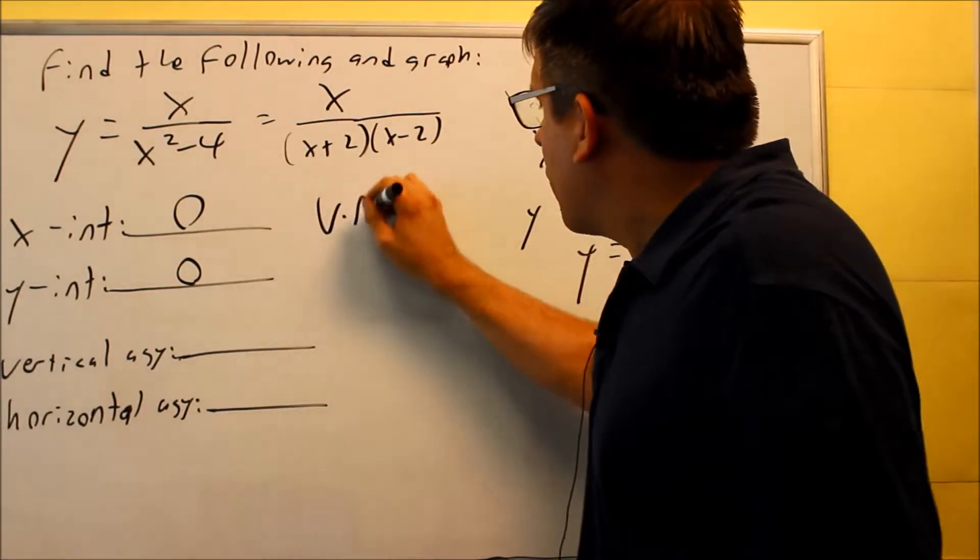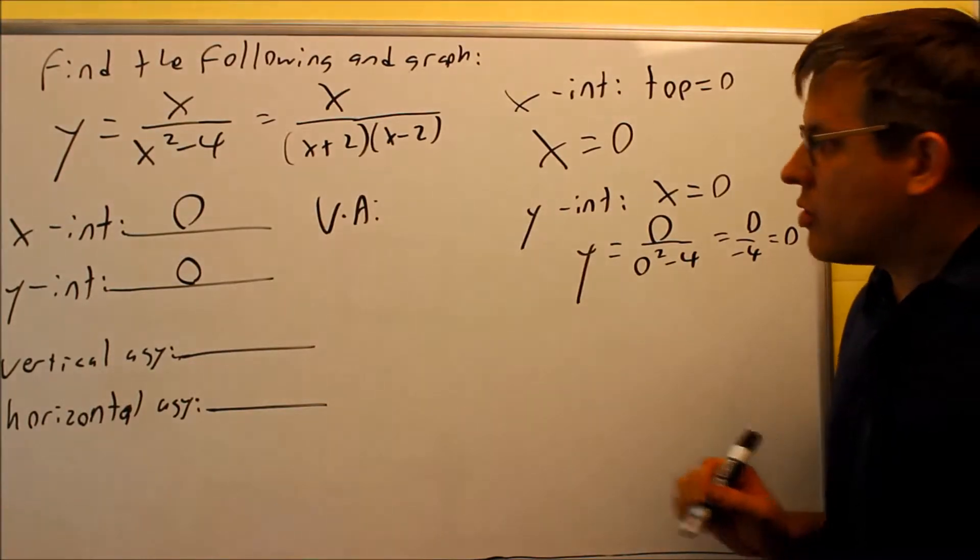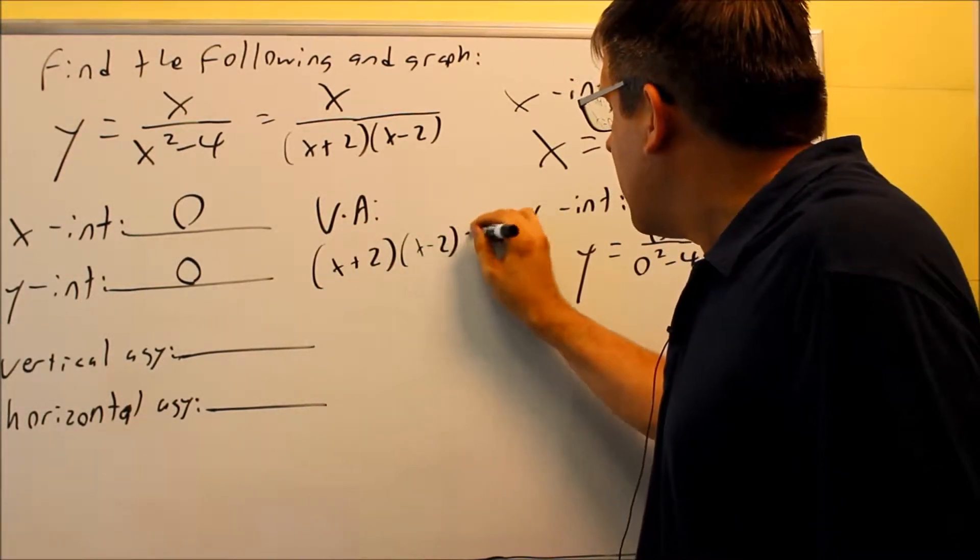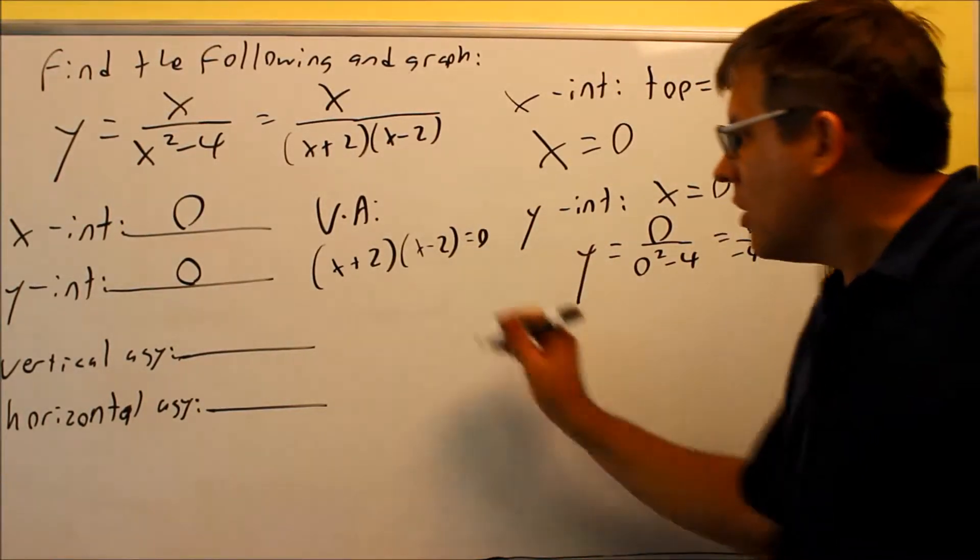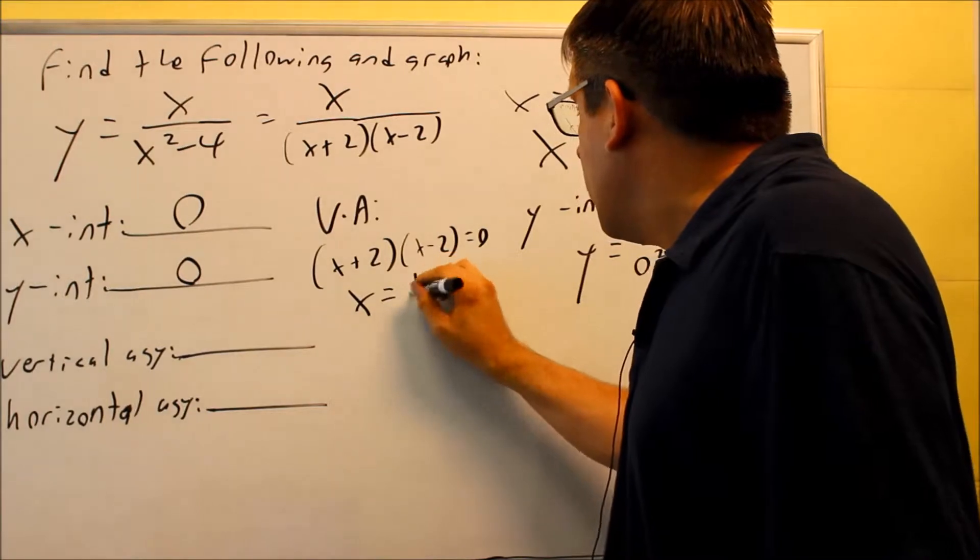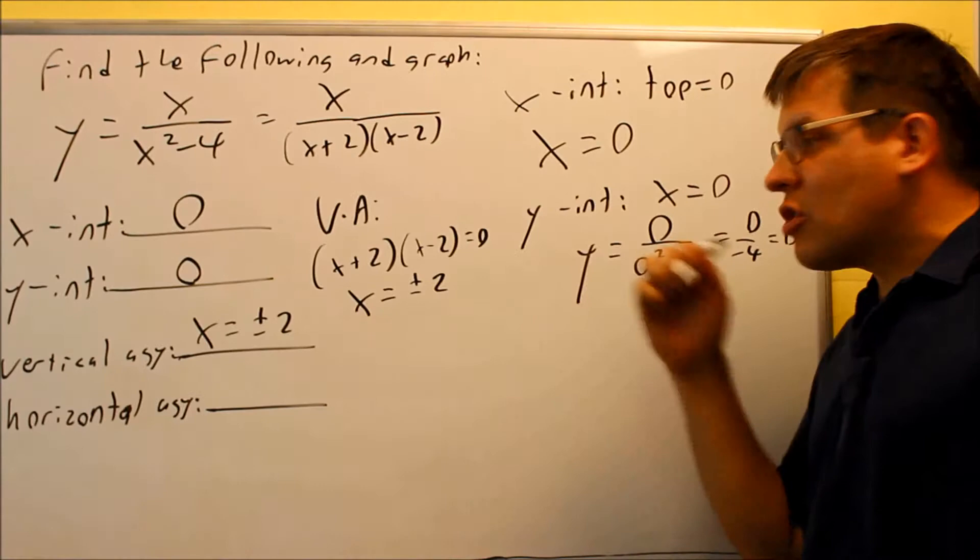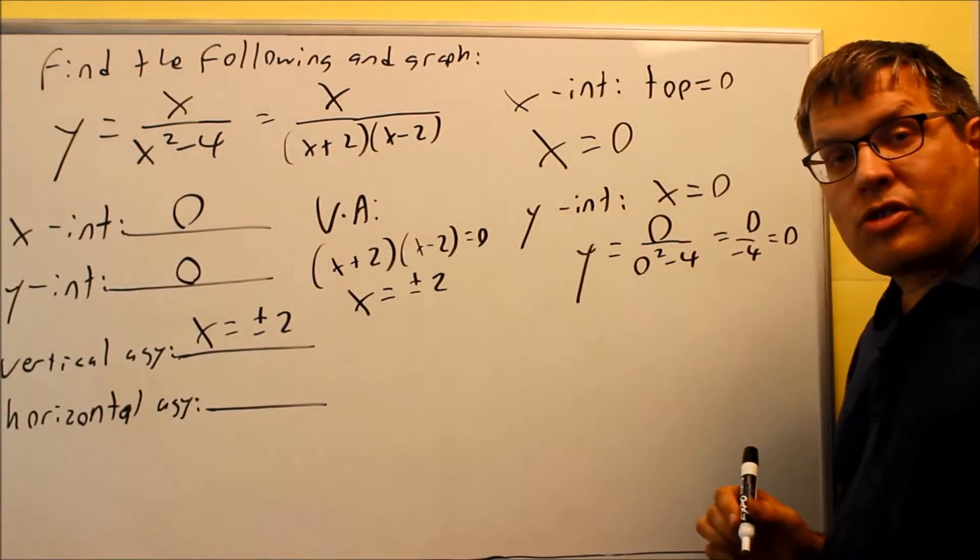So now that we have that, now our vertical asymptote. Vertical asymptote, you're going to set the bottom one equal to 0. The bottom one has already been factored, so we're going to take X plus 2, X minus 2 equals 0. We'll solve for that, and you're going to get X is equal to plus or minus 2. That would be your vertical asymptote. X is equal to 2 and X is equal to negative 2, or you can write it as plus or minus.